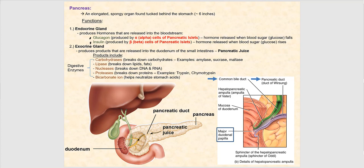Pancreatic juice contains the secretions produced by the exocrine gland function of the pancreas — specifically, digestive enzymes called pancreatic enzymes. Examples include carbohydrases (enzymes that act on carbohydrates), lipases (break down lipids), nucleases (break down DNA and RNA), and proteases (break down proteins), examples of which are trypsin and chymotrypsin.